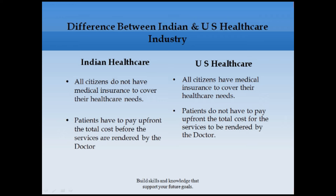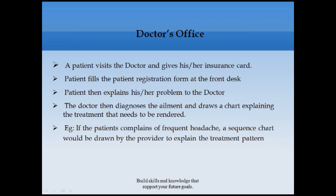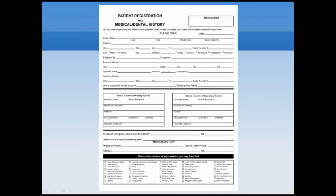In a US doctor's office, the patient sees the doctor and gives their insurance card. The patient also fills out a patient demographic form at the front desk. This form includes the patient's name, date of birth, address, current employer name, policy information, and previous medical history. This information is entered the first time they visit, and on follow-up visits they only need to update if there are any changes.